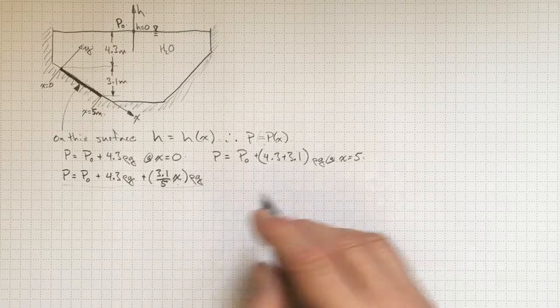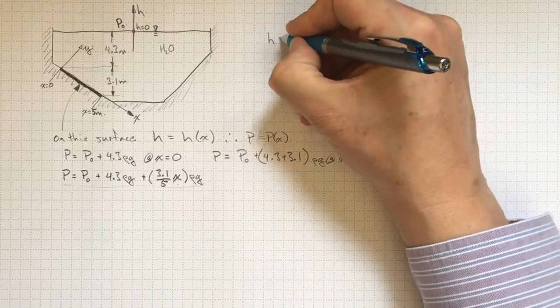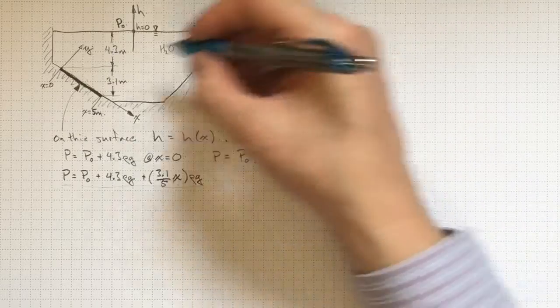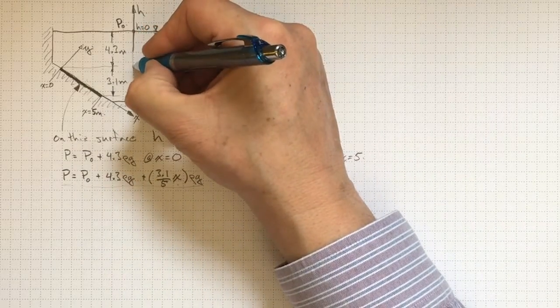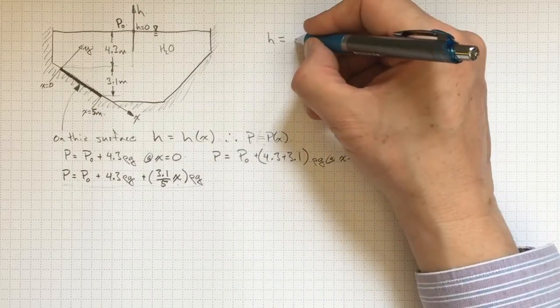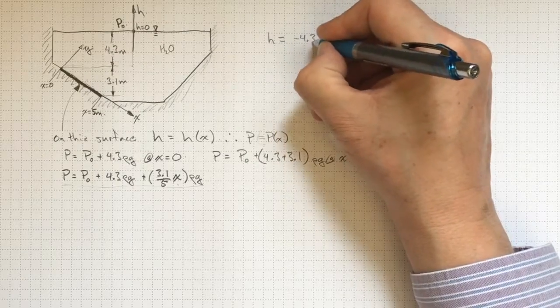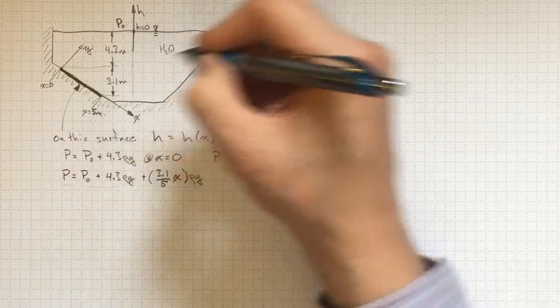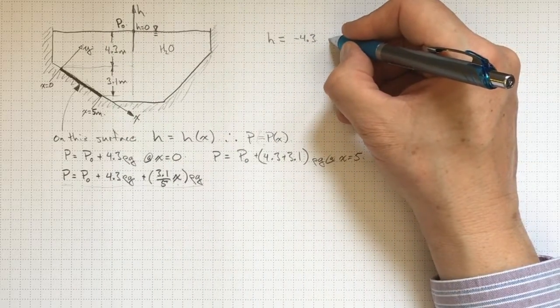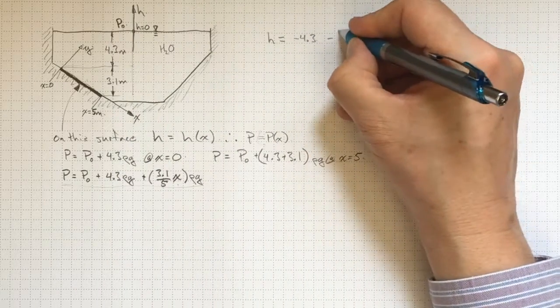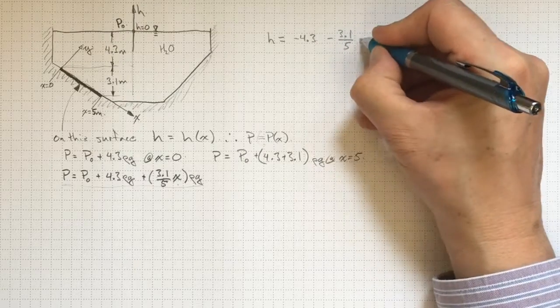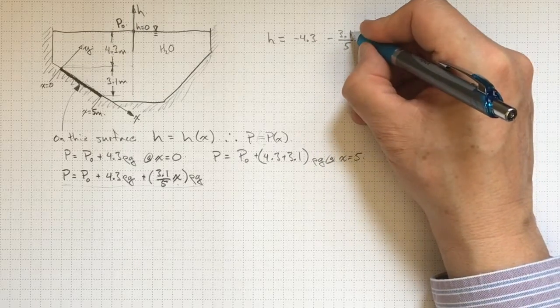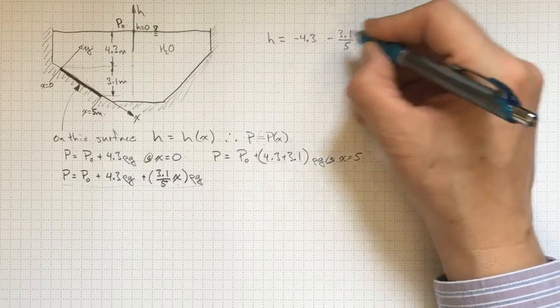Or we could approach this from a different direction. We could say that h, well, what is h? h is negative 4.3 by the time we get there. And it's getting deeper and deeper still. And so it'll be 3.1 by the time we get to five. So when x is equal to five, we go another 3.1 deeper.